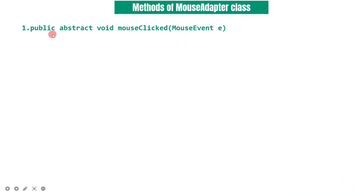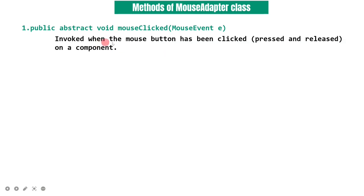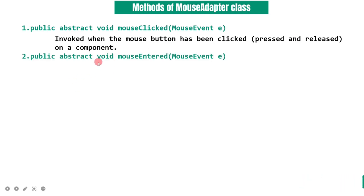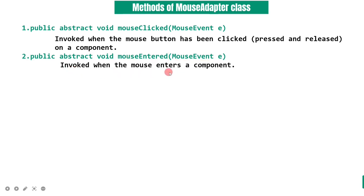The first method is mouseClicked - public void mouseClicked. This method is invoked when the mouse button has been clicked, that is pressed and released, on a component such as a frame or window. The next method is public void mouseEntered, which is invoked when the mouse enters the component or window.